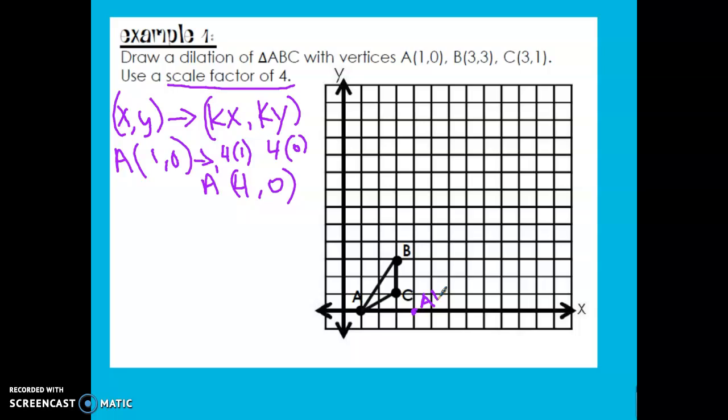Moving to B, B started at (3, 3). I'm going to multiply each point by my scale factor of 4. In this case, they are both 3. So 4 times 3 is 12. So my new B prime is at (12, 12). There's your B prime.